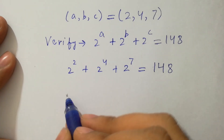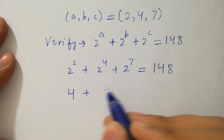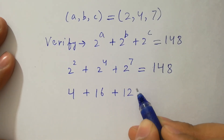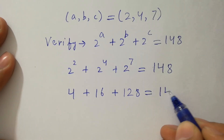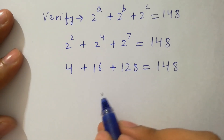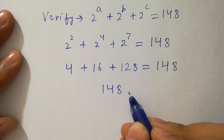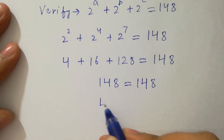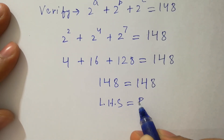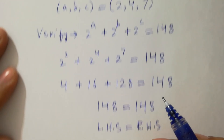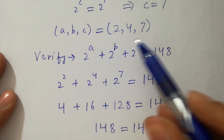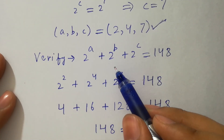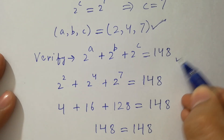2 to the power a is 4, plus 2 to the power 4 is 16, plus 2 to the power c is 128, equal to 148. By adding them we have 148 equal to 148. Left hand side equals right hand side, which shows that the values of a, b and c satisfy the equation 2 to the power a plus 2 to the power b plus 2 to the power c equal to 148.